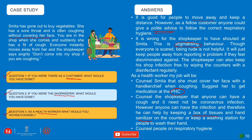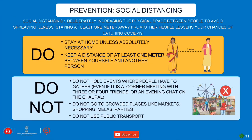Social distancing means deliberately increasing the physical space between people to avoid spreading illness. Staying at least one meter away from others lessens your chances of catching COVID-19. One meter distance prevents the spread from infected to uninfected persons.